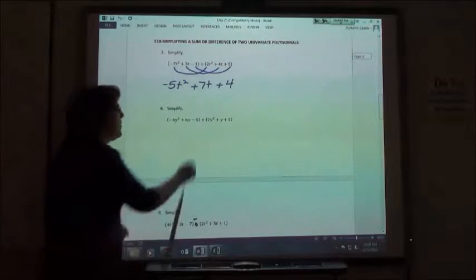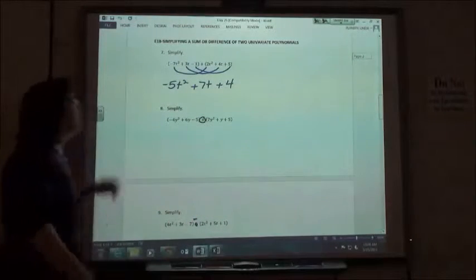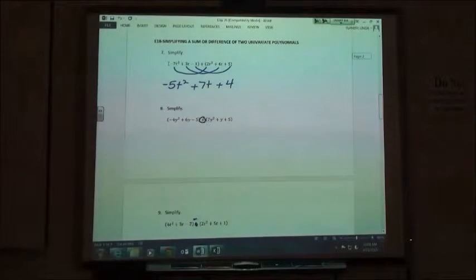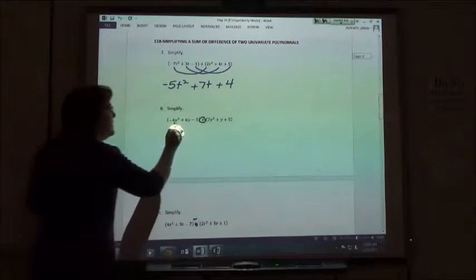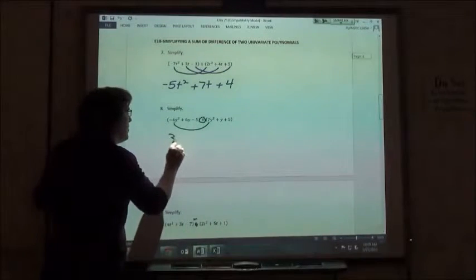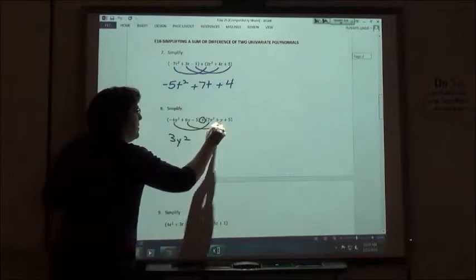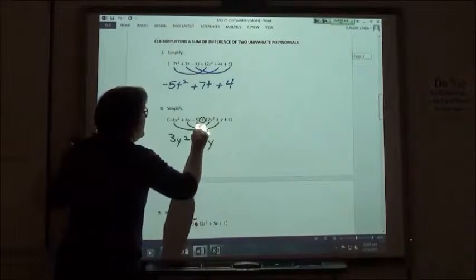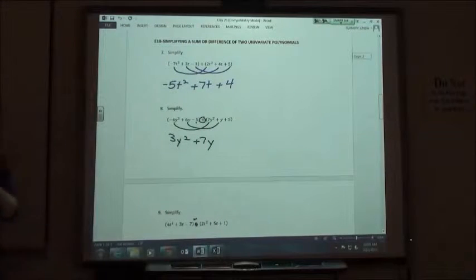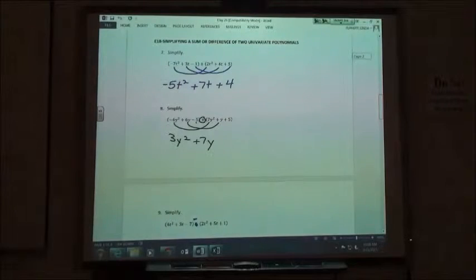And so again, if I look at number 8, there's a plus sign in the middle telling me I'm just going to add the like terms together. And so I would get 3y squared plus 7y and that'd be it because I'd get a 0 on the other one and I don't need to put the plus 0, right?